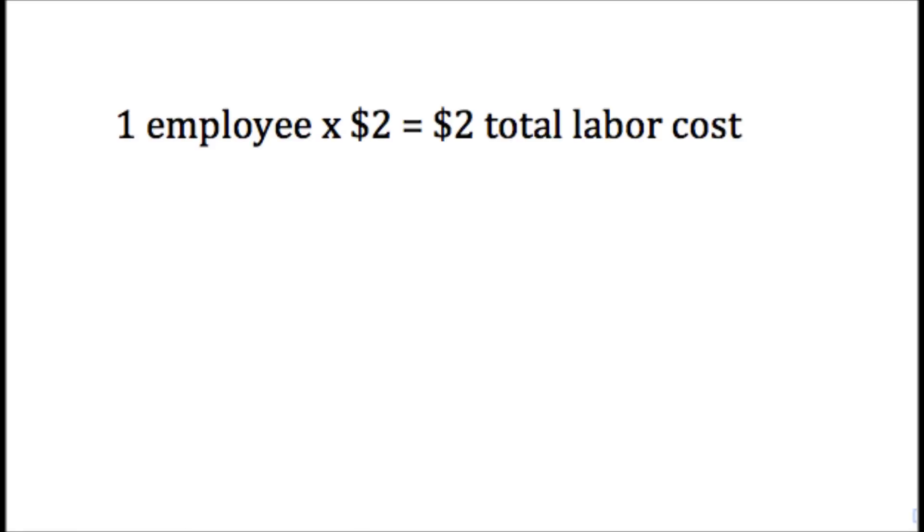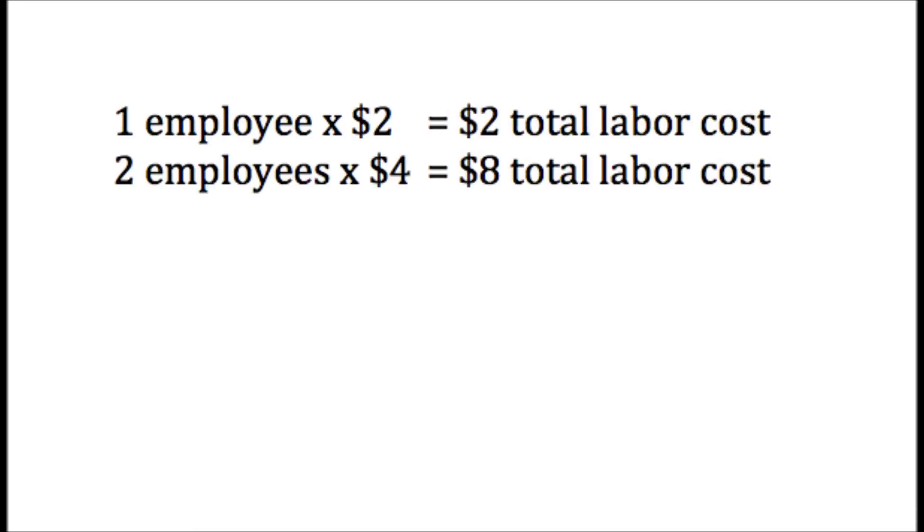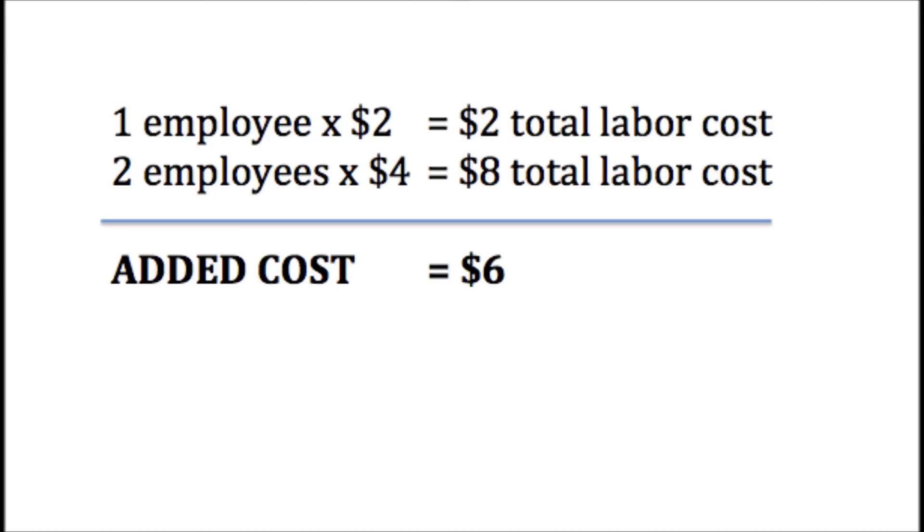If the firm wants to attract more workers, it will need to offer better wages. The firm can hire two workers by offering a wage of $4. But because it must pay both employees the $4 wage, the total cost is now $8. So the added cost of the second worker, or the marginal factor cost, is $6. The $4 added salary to the new worker, plus a $2 raise for the existing employee.